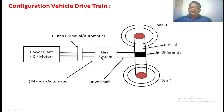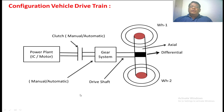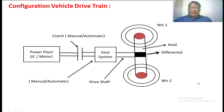Similarly for the gearbox, there are multiple gearboxes used when the power plant is an IC engine. If you use a motor, only a single gearbox is used. There are two types of gearbox: one is manual gearbox, another one is the automatic gearbox. This is the driving shaft, this is the differential, this is the axle, and these are the two wheels. This is the general configuration of the vehicle drivetrain.